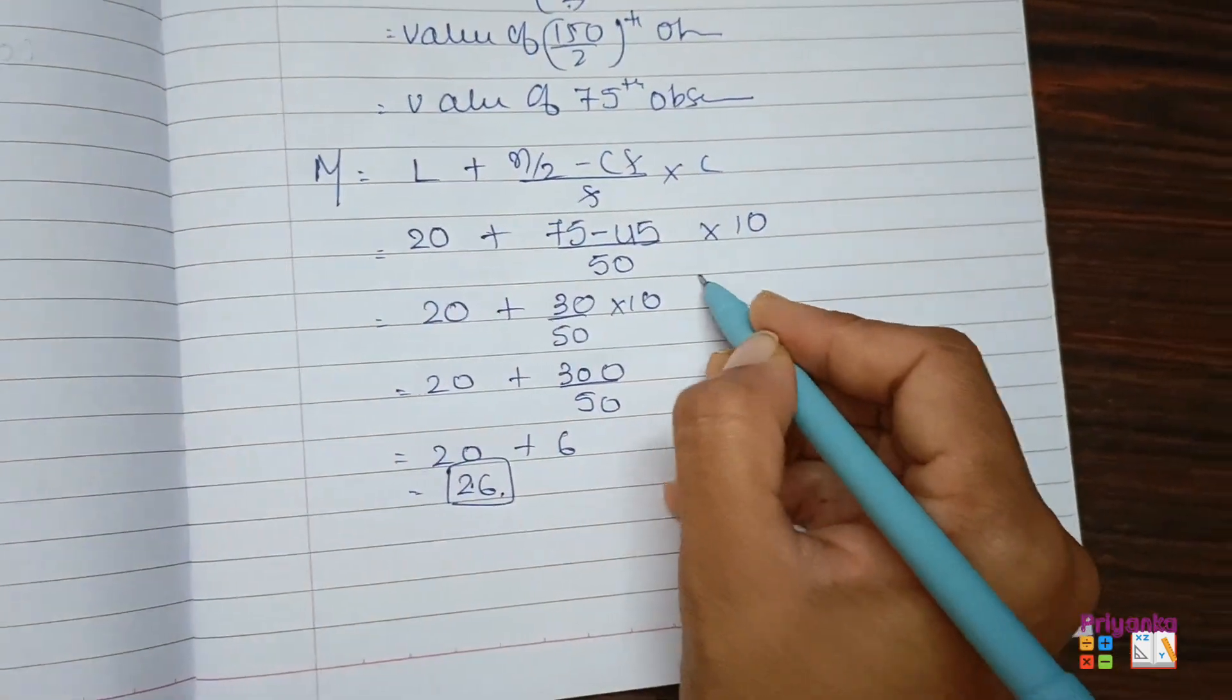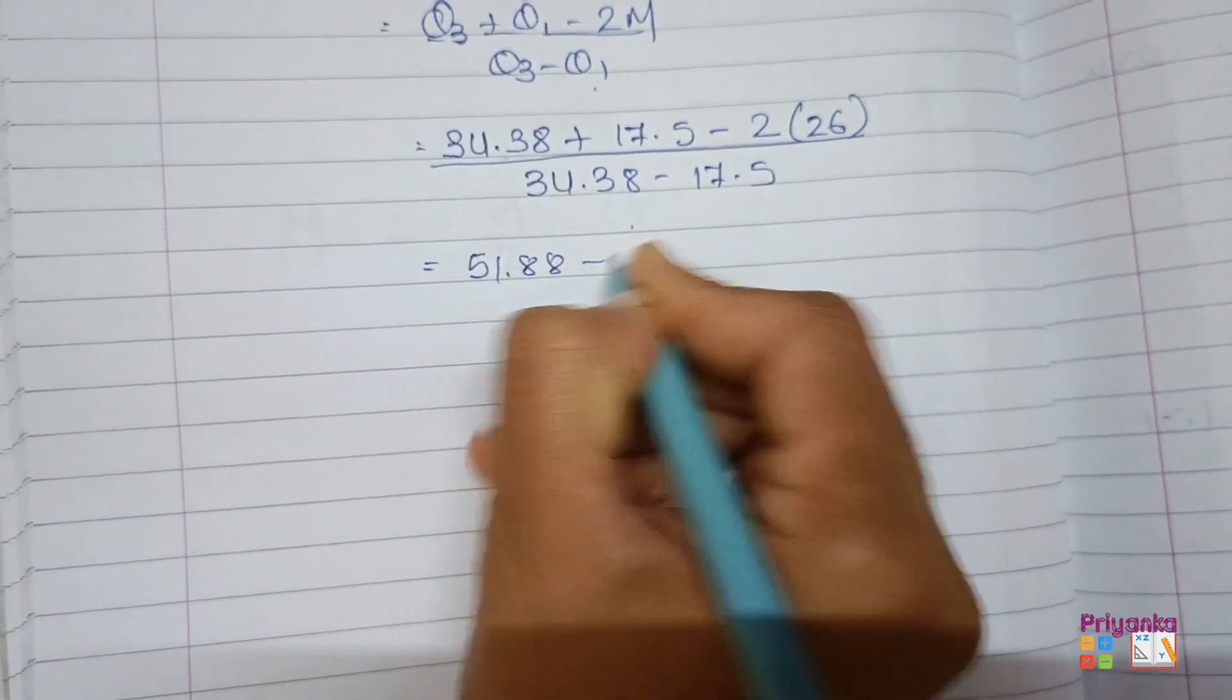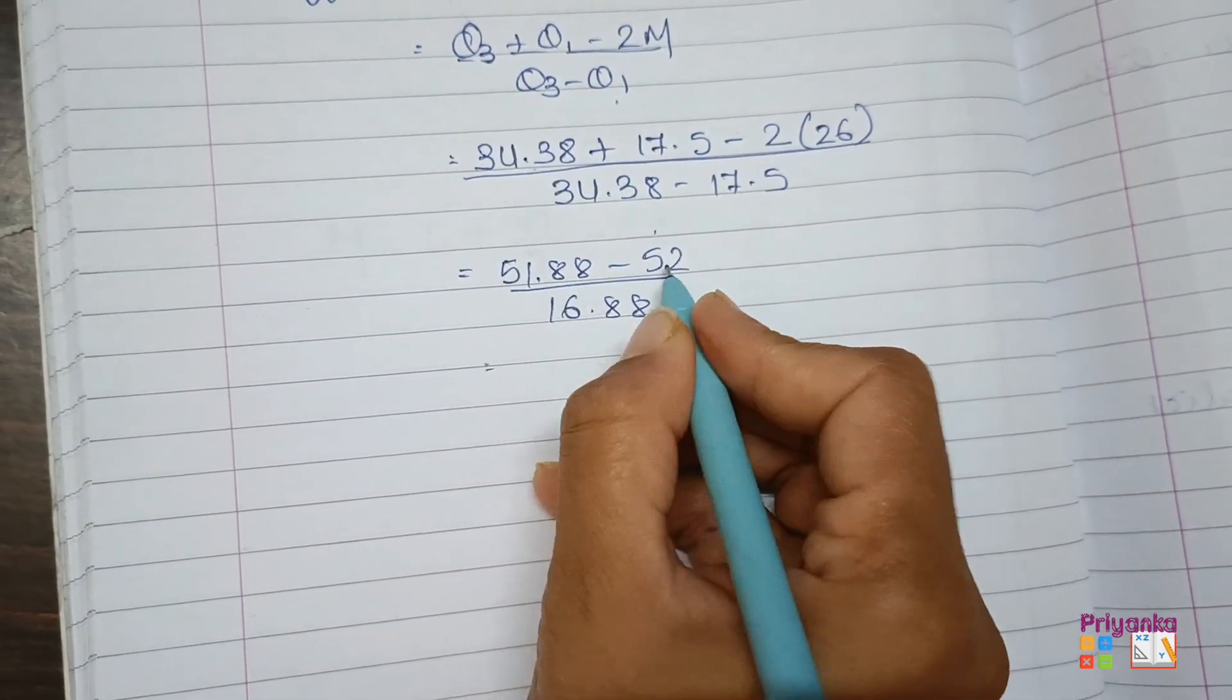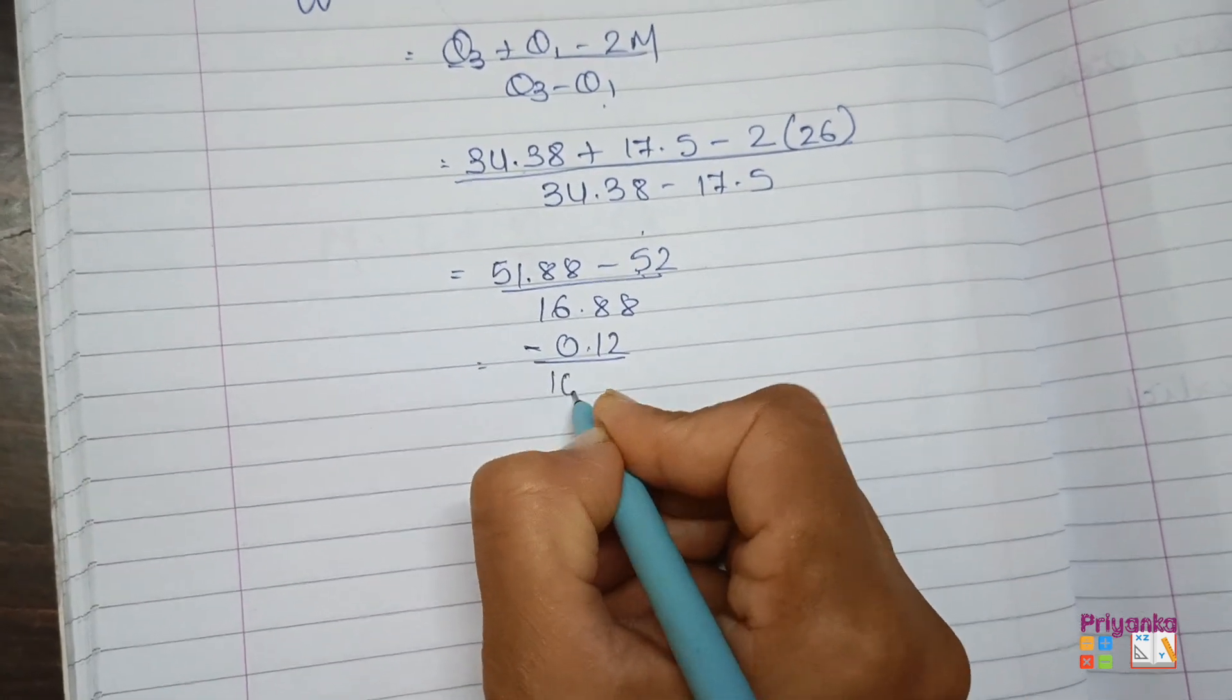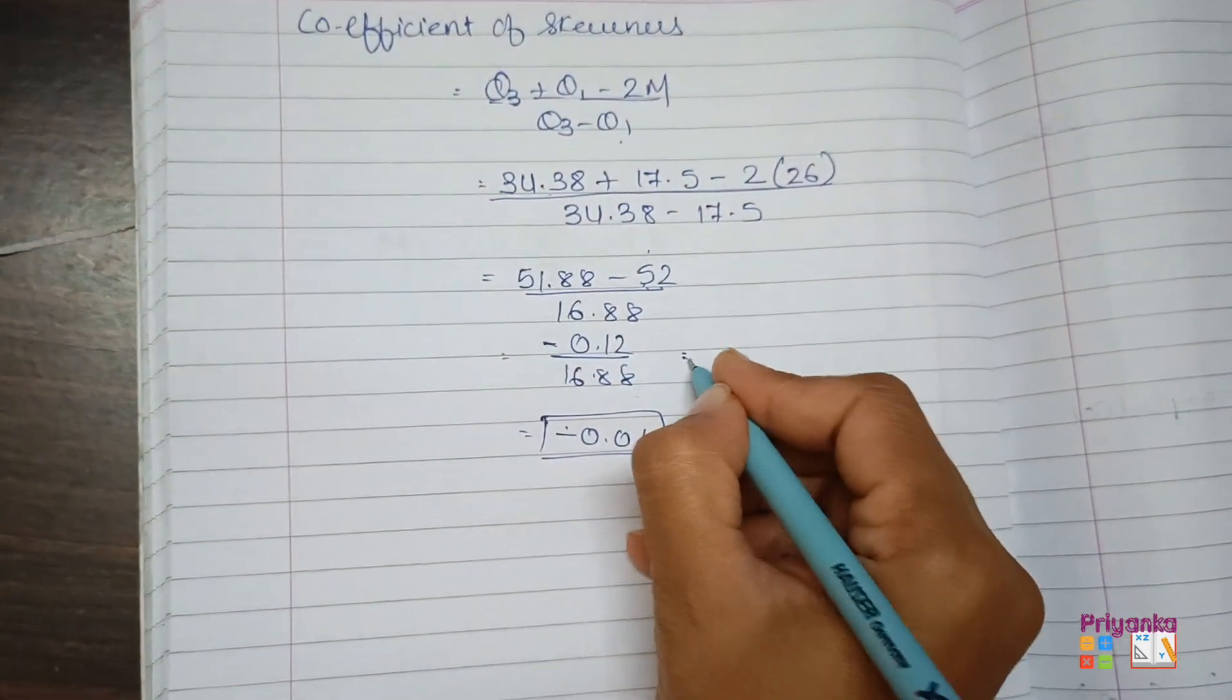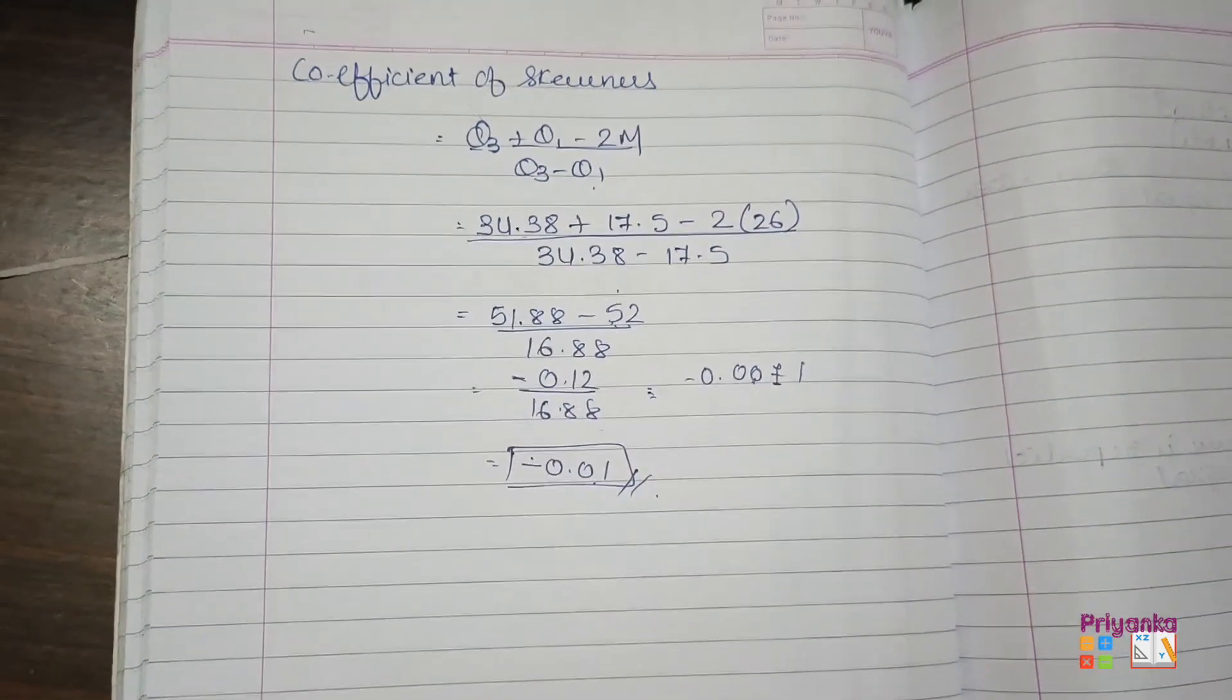Now the final, we'll find out. Here is a formula of coefficient of skewness in the Bowley's method, and here I get the values. Now just get them add, you will get 51.88 minus the multiplication of this 2 will be 52, and the subtraction of this, negative 0.12. Now let them subtract, you will get 52 bada hai, so which answer? Minus mein aega, here we'll get negative 0.12, and the answer is minus 0.01. Actually the answer is minus 0.0071, so 7 hai, 5 se zyada hai, to aage wala number badh gaya, 0 se 1. Moving to the next question.